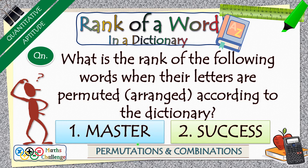The first word, master, is a case where there is no repetition of letters in the given word, so we have to find out its rank among all its possible permutations. The second example word, success, is a case of permutation when there is repetition of letters. Take notes as we go along — it will help you understand the concept and apply it to similar questions when you are attempting the quant section of exams.